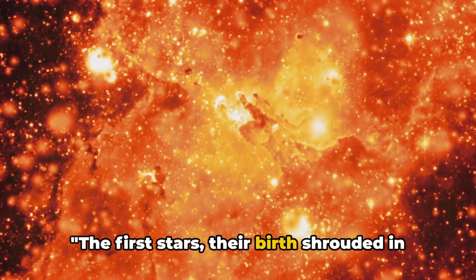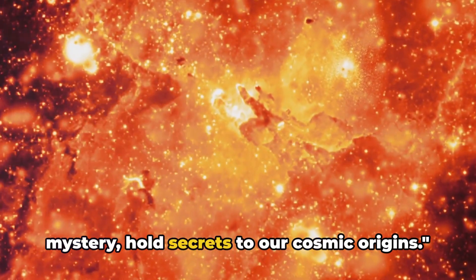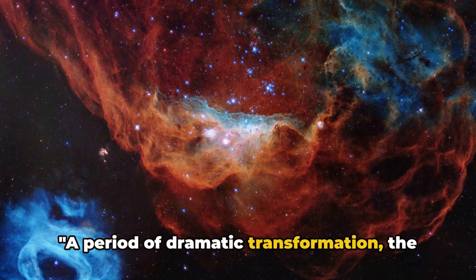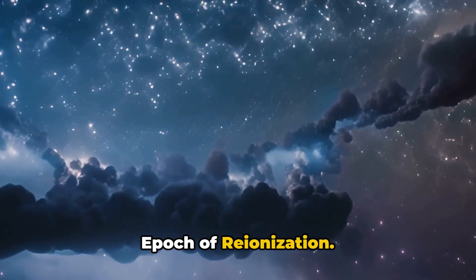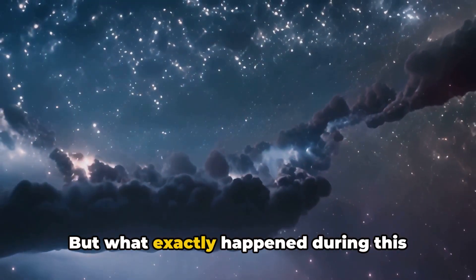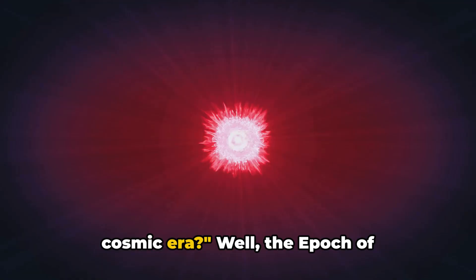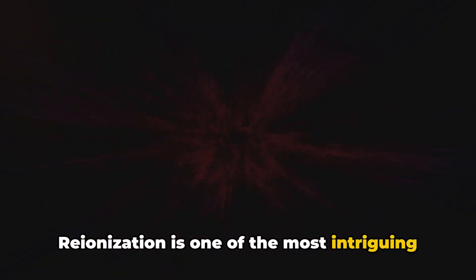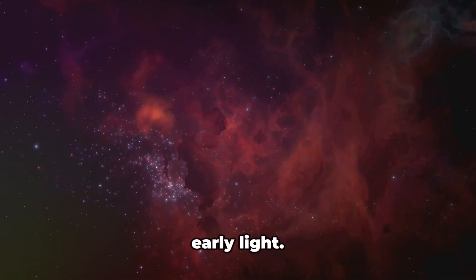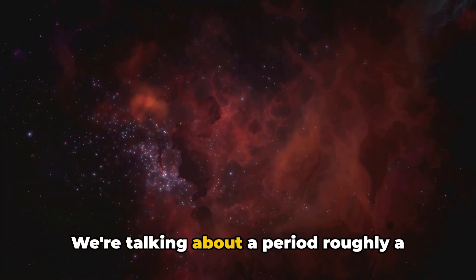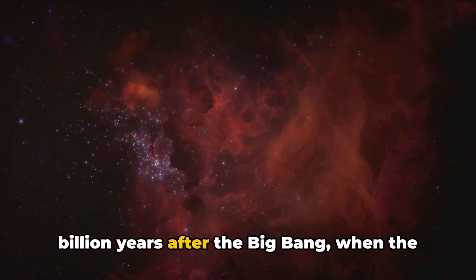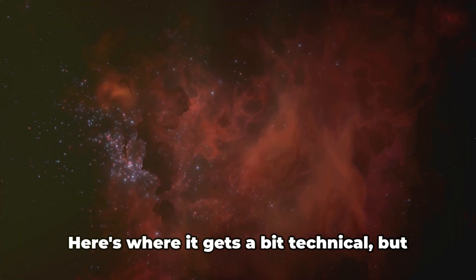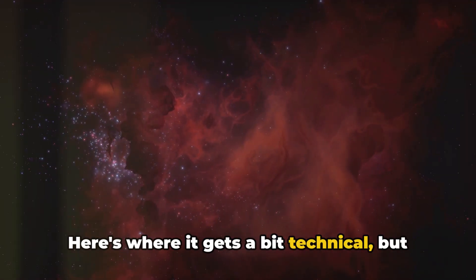The first stars, their birth shrouded in mystery, hold secrets to our cosmic origins. A period of dramatic transformation, the epoch of reionization. But what exactly happened during this cosmic era? Well, the epoch of reionization is one of the most intriguing chapters in the story of our universe's early light. We're talking about a period roughly a billion years after the big bang, when the universe underwent a significant change. Here's where it gets a bit technical, but hang in there.